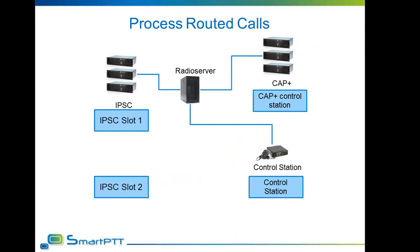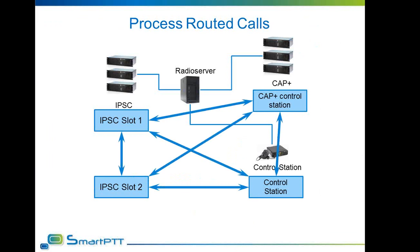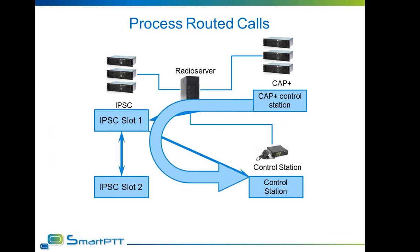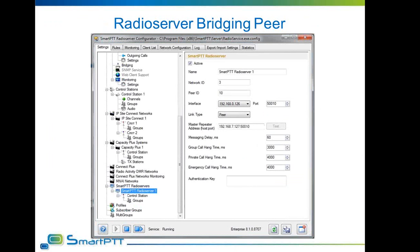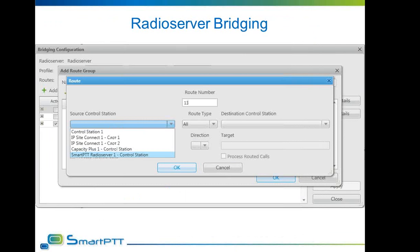To decrease the number of routes and make the bridge system more flexible, it is possible to process routed calls. In this case, you can eliminate the need to make an all-to-all bridge system and make calls go through one point, which is set to process routed calls. When you need to configure cross-radio server bridging, you will need to set up one radio server as master of the tunnel and specify an interface to be used to connect to it. After that, it will be possible to select the other radio server in the common bridging interface to make cross-radio server bridges.